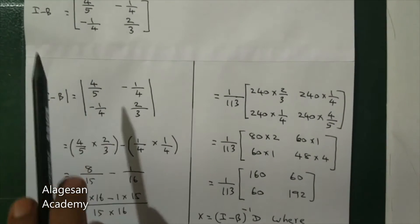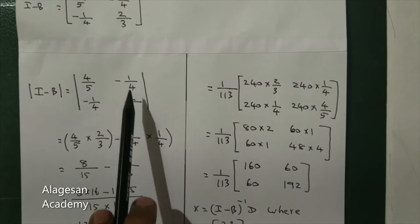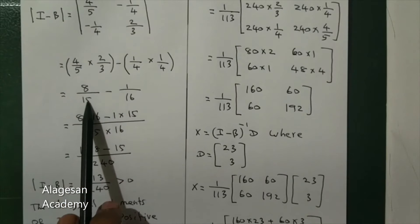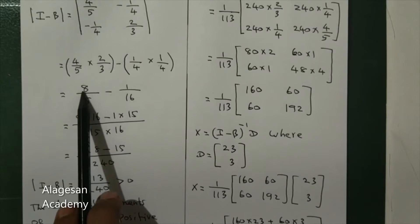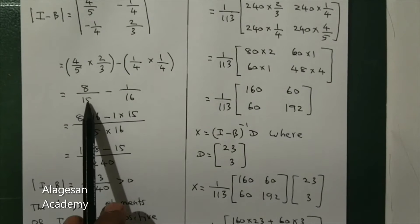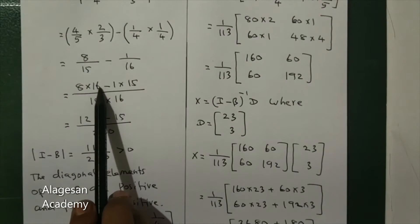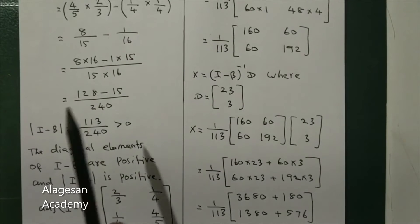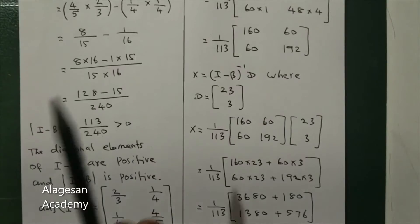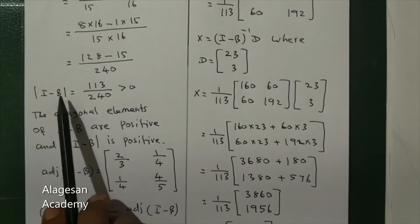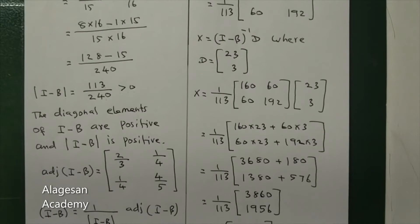Find the determinant of (I - B): (4/5)(2/3) - (-1/4)(-1/4) = 8/15 - 1/16. Taking LCM of 15 and 16, which is 240: (128 - 15)/240 = 113/240. Since the diagonal elements of (I - B) are positive and the determinant is also positive (113/240 > 0), the system is viable.